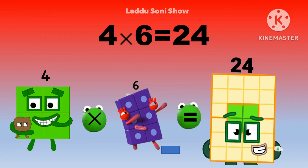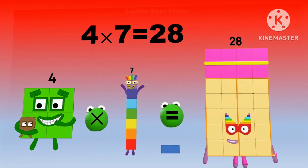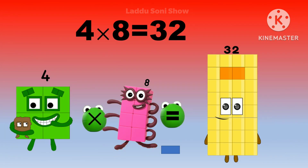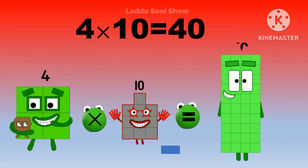Four sixes are twenty-four. Four sevens are twenty-eight. Four eights are thirty-two. Four nines are thirty-six. Four tens are forty.